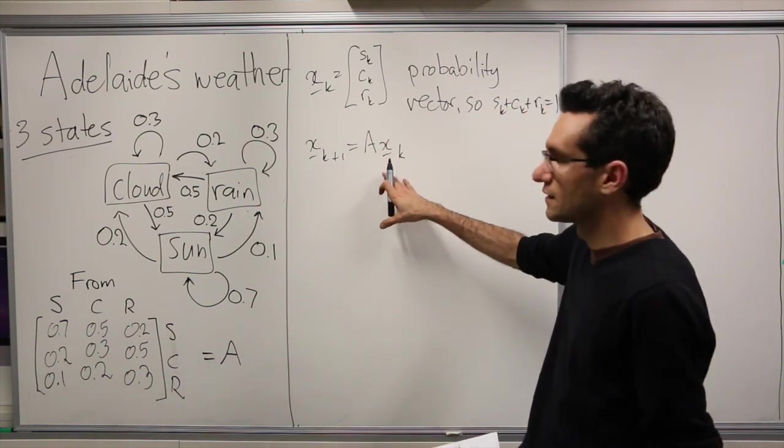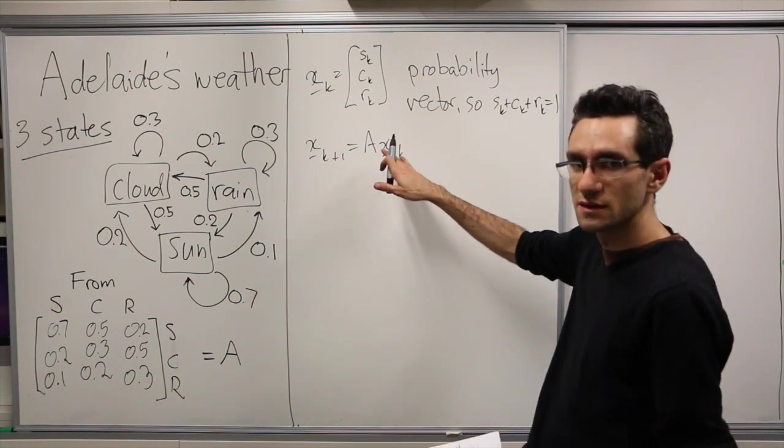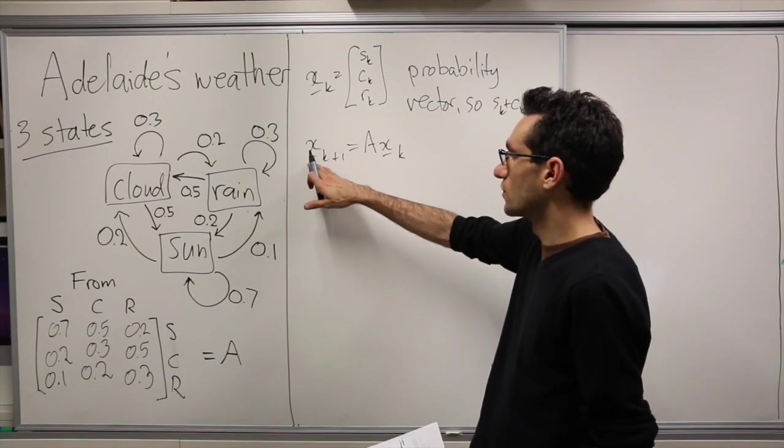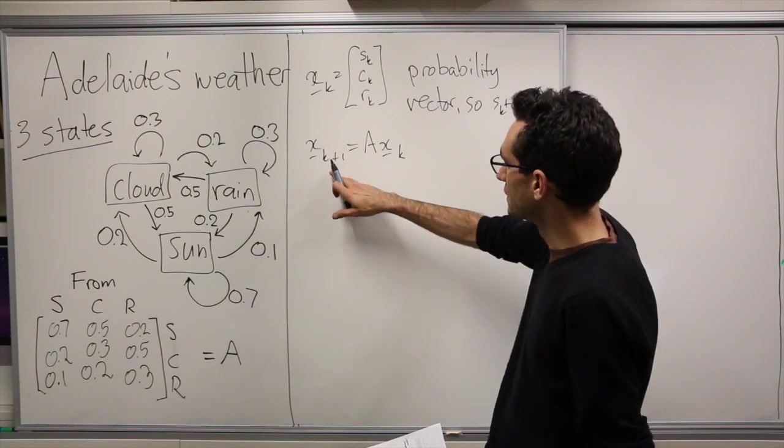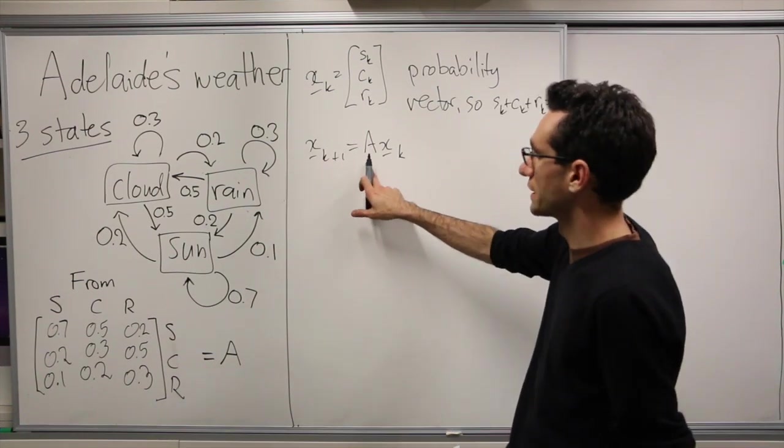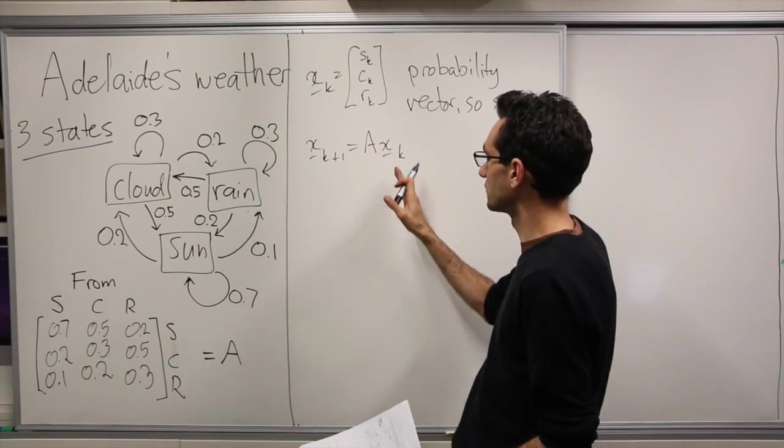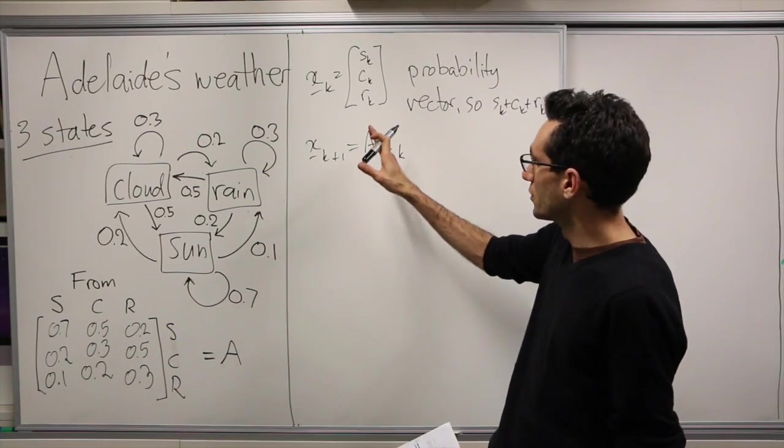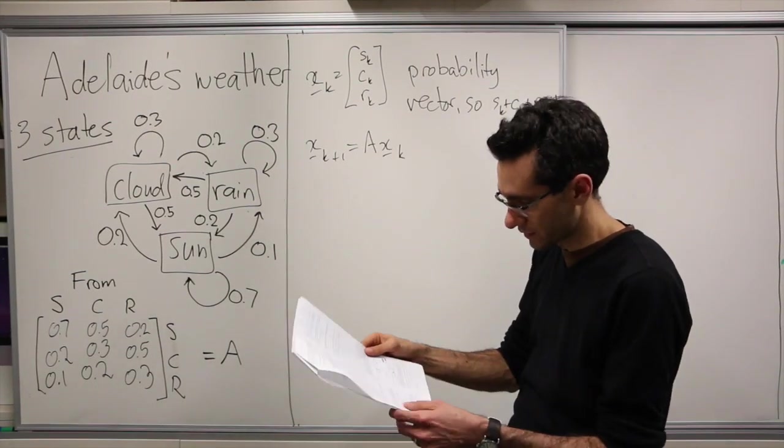And we have xk+1 given by A times xk. So whatever it is today, the likelihood for sunny, cloudy and raining, the likelihood for it to be sunny, cloudy or raining tomorrow is going to be given by the vector when we multiply by A. And as I mentioned in class, if we have a probability vector multiplied by a stochastic matrix, we again get a probability vector.